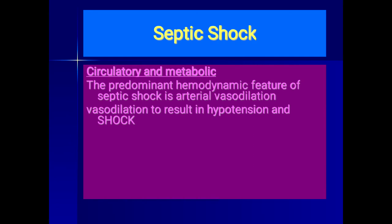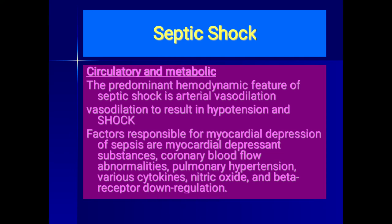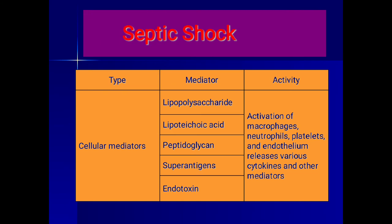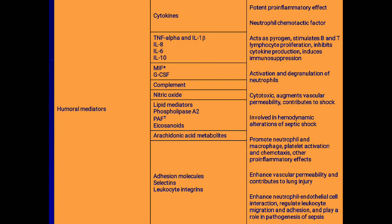The predominant hemodynamic feature of septic shock is arterial vasodilation, which results in hypotension and shock. Factors responsible for myocardial depression in sepsis include myocardial depressant substances, coronary blood flow abnormalities, various cytokines, nitric oxide, and beta-receptor downregulation. Cell mediators causing septic shock include lipopolysaccharides, lipoteichoic acid, peptidoglycan, superantigens, and endotoxins.